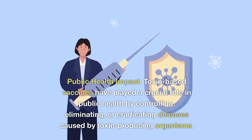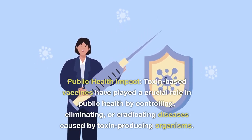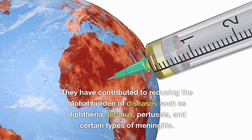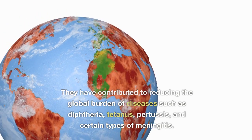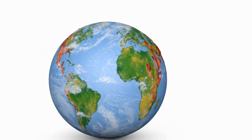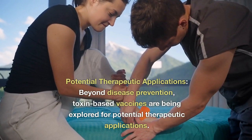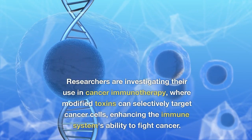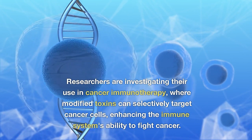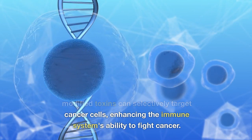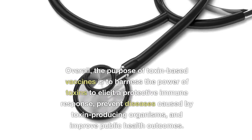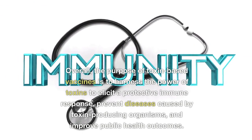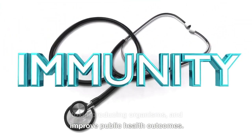Public health impact: toxin-based vaccines have played a crucial role in public health by controlling, eliminating, or eradicating diseases caused by toxin-producing organisms. They have contributed to reducing the global burden of diseases such as diphtheria, tetanus, pertussis, and certain types of meningitis. Potential therapeutic applications: beyond disease prevention, toxin-based vaccines are being explored for potential therapeutic applications. Researchers are investigating their use in cancer immunotherapy, where modified toxins can selectively target cancer cells, enhancing the immune system's ability to fight cancer. Overall, the purpose of toxin-based vaccines is to harness the power of toxins to elicit a protective immune response, prevent diseases, and improve public health outcomes.